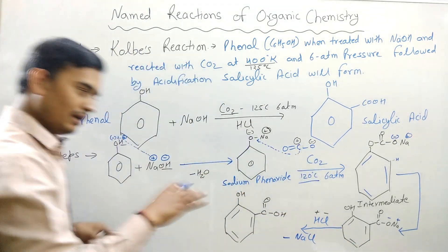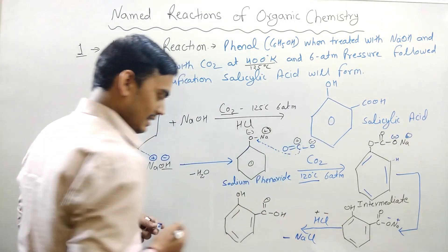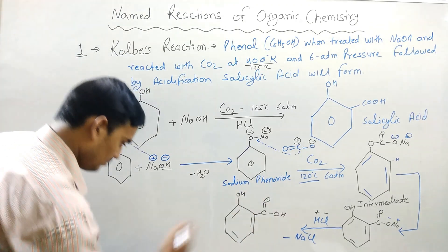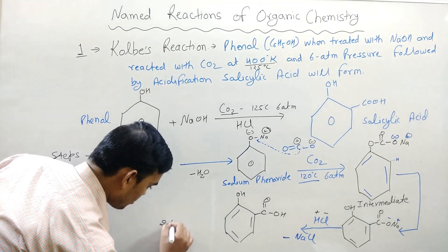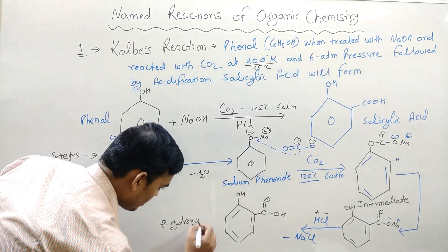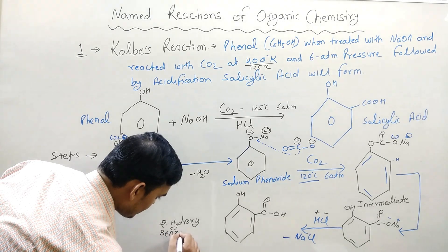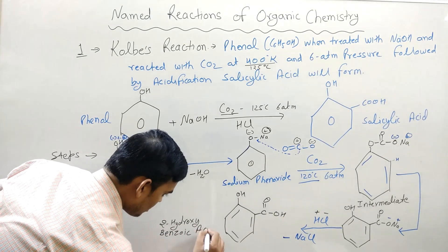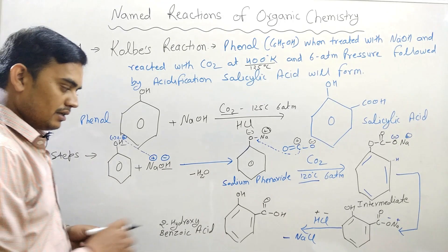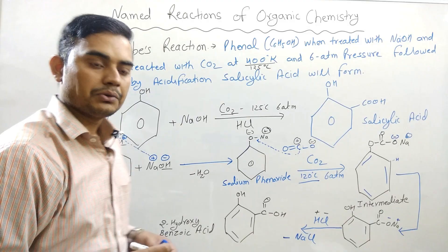So this is our salicylic acid, also known as 2-hydroxybenzoic acid. This is our final compound in Kolb's reaction. Thank you.